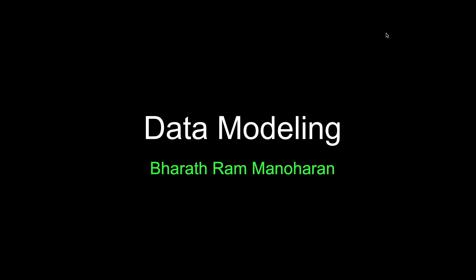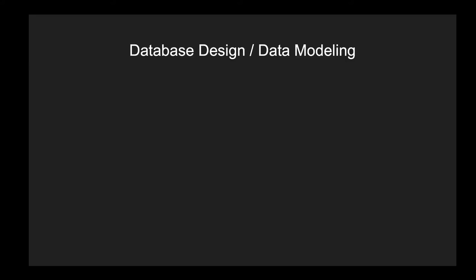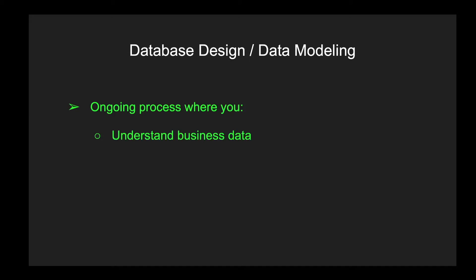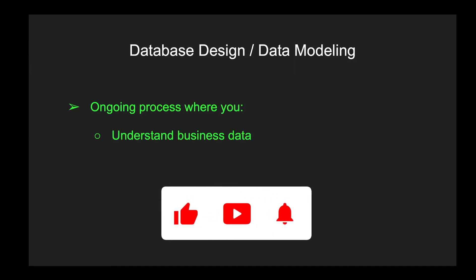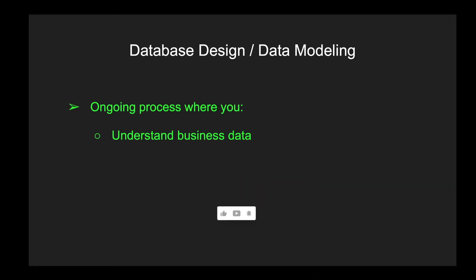In this section we are going to talk about data modeling — database design, schema design. These are all interchangeable terms. Database design is an ongoing process: you come up with a basic design when you create your application, and then as the application gets new features and enhancements, you iterate over this design, keep adding new things. The first thing you do when doing data modeling is understand the business data.